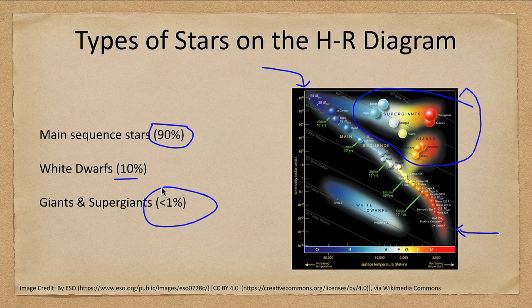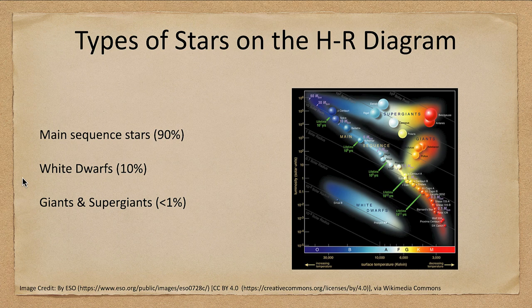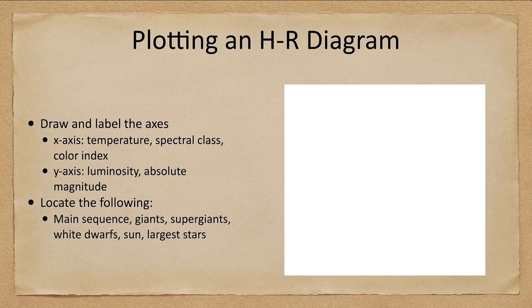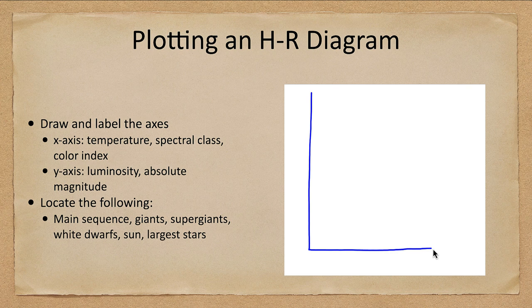Let's look at an HR diagram and how we can plot one. We're going to do a rough plot here and we'll look at this in more detail in a future lecture. First thing we want to do is draw the axes - we draw an axis for the y-axis and go across for the x-axis.